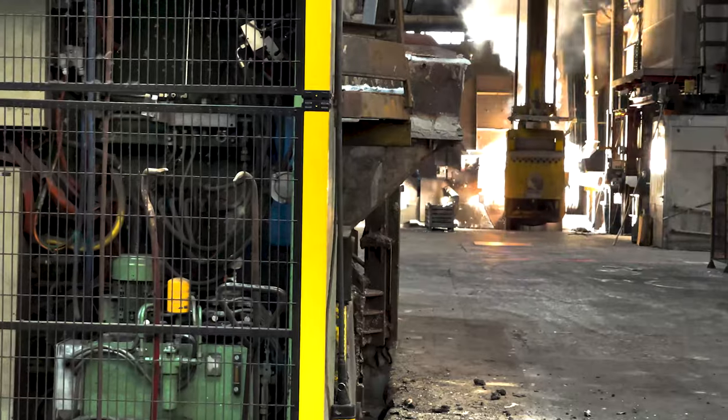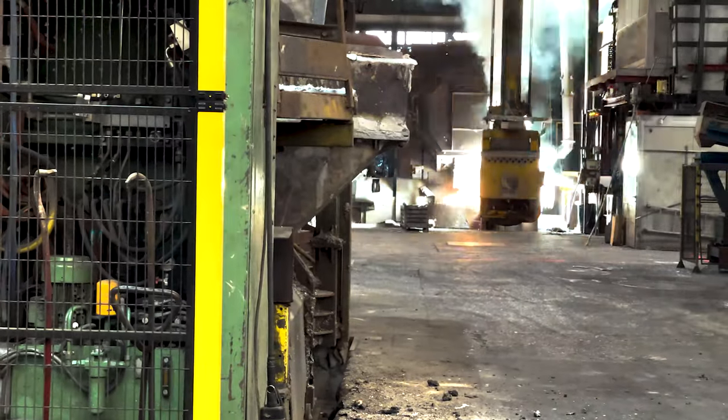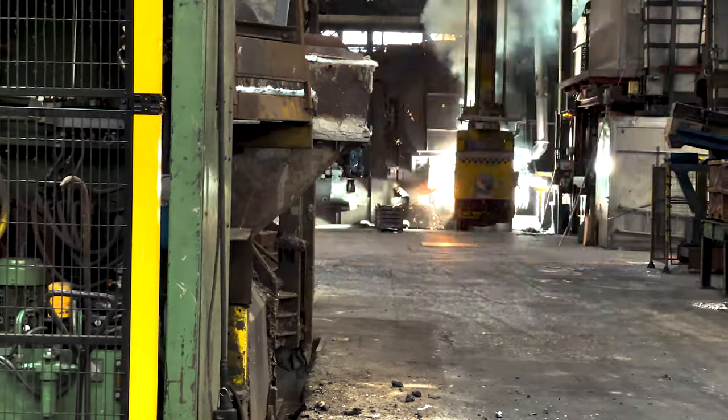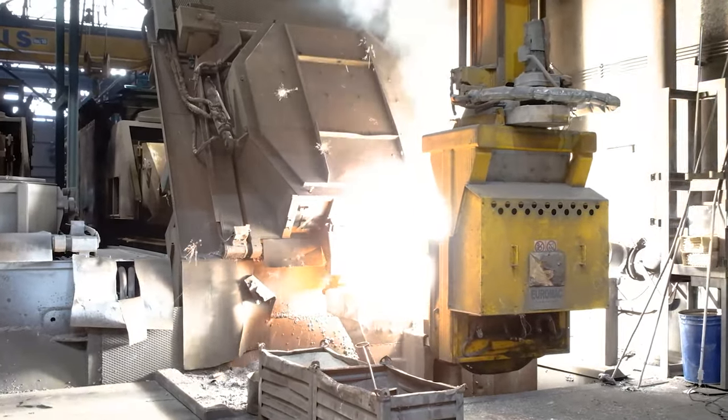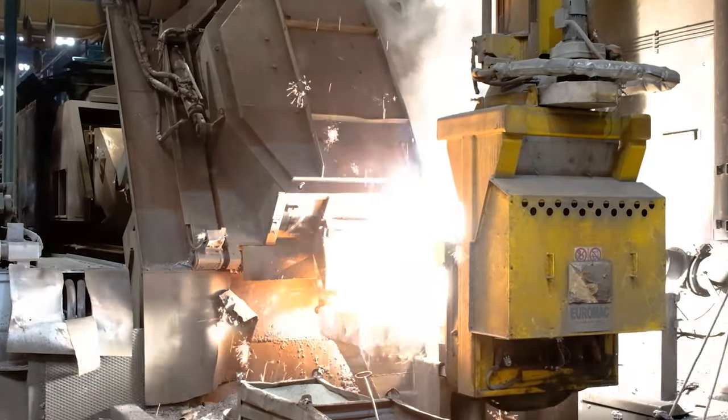During the pouring, the very violent spheritization reaction begins inside the treatment ladle, which enables the formation and growth of graphite particles in a spheroidal shape rather than lamellar shape when solidifying.